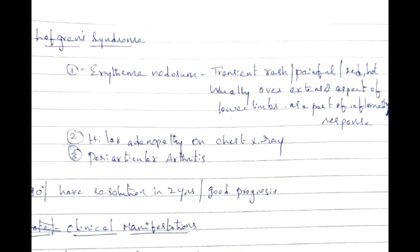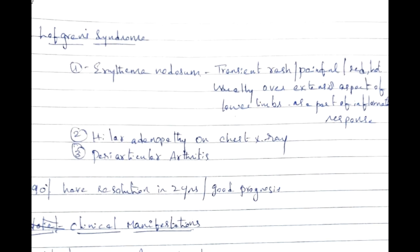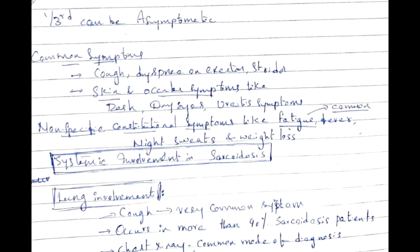Löfgren's syndrome consists of three components: erythema nodosum — a transient, painful red rash seen on the extensor aspect of the lower limbs — hilar adenopathy on chest X-ray, and periarticular arthritis. 90% of patients with Löfgren's syndrome have good prognosis, unlike sarcoidosis in general.